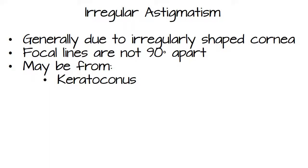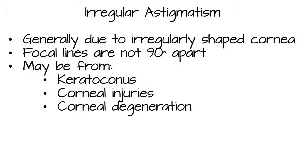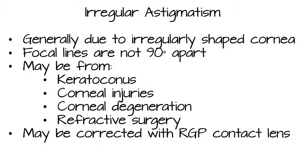There's a whole lot of things that might cause irregular astigmatism. And it's usually not correctable by soft contact lenses or eyeglass lenses. The best thing to correct is usually rigid gas permeable contact lenses.